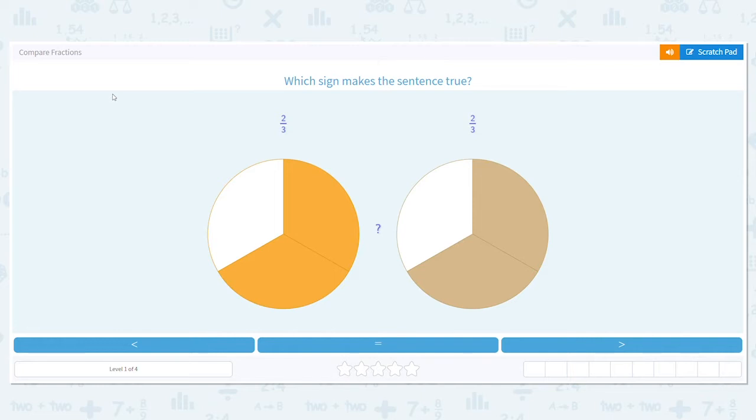So we need to figure out which sign makes the sentence true. I have two-thirds and two-thirds. Well, look at the fractions. Are my numerators and denominators the same? They are. I have two and two for my numerators, three and three for my denominators.